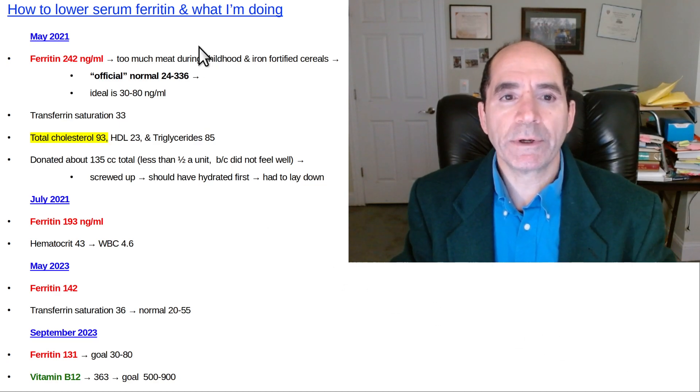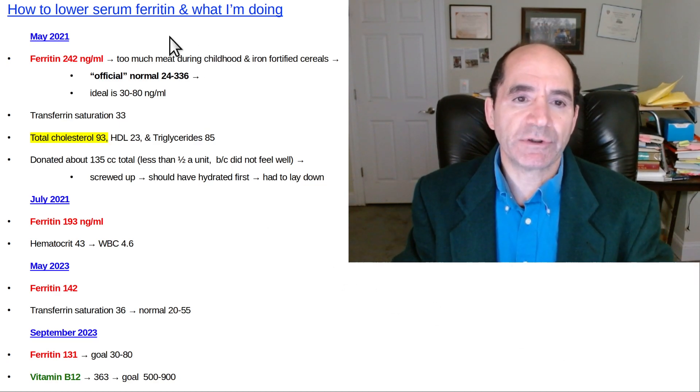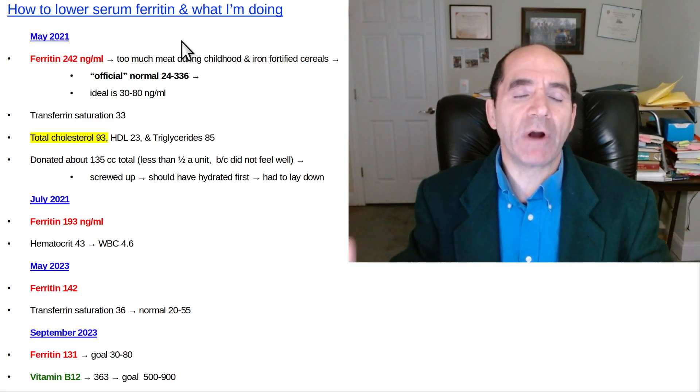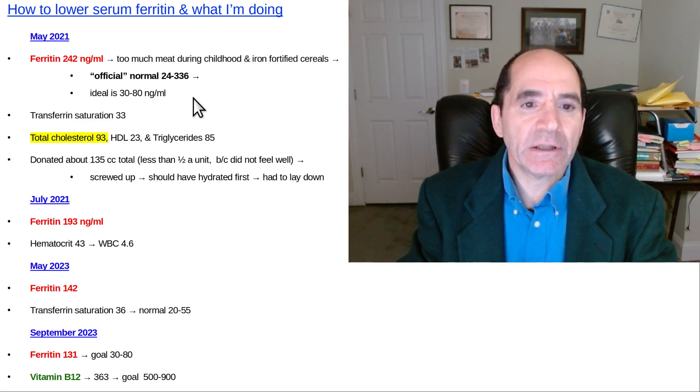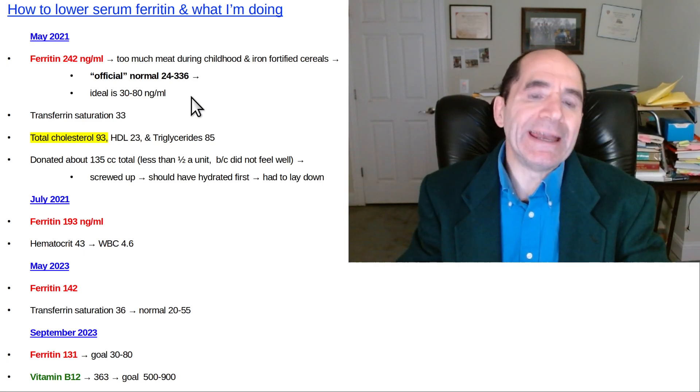This video is called how to lower your serum ferritin and what I'm doing. So serum ferritin is an indicator of your iron total body storage. And the ideal amount for serum ferritin is to get it down below 80.